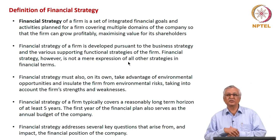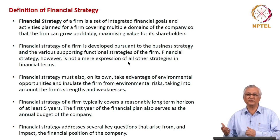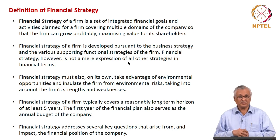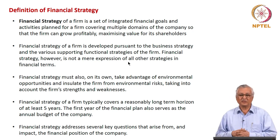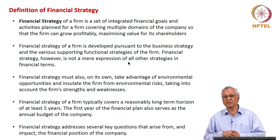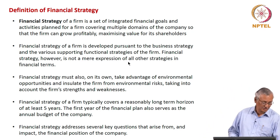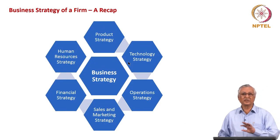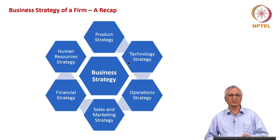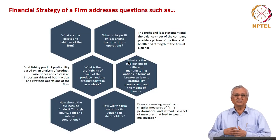Like business strategy, financial strategy also covers a long-term horizon of five years, and in the case of infrastructure companies maybe 10 or 15 years. The financial strategy of the company directly impacts the financial position of the company, and the financial position of the company in turn impacts the financial strategy. Again, a recap of how business strategy comprises key functional strategies, of which financial strategy is one. Like other strategies, there are certain core questions that need to be answered by the financial strategy.